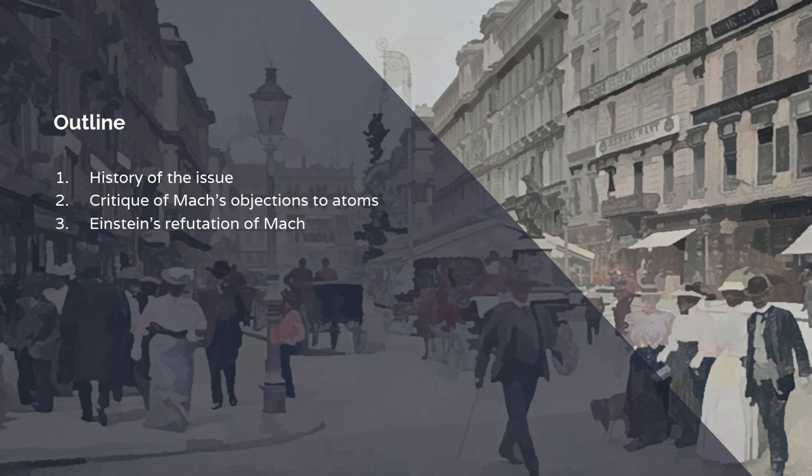So I'm going to look at the history of the issue, I'm going to critique Marx's objections to atoms, and I will look at Einstein's refutation of Marx, because people don't necessarily appreciate that Einstein's greatest work can be seen very directly as a refutation of Marx.